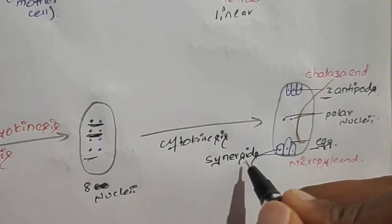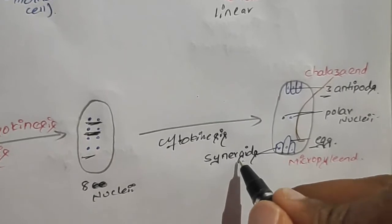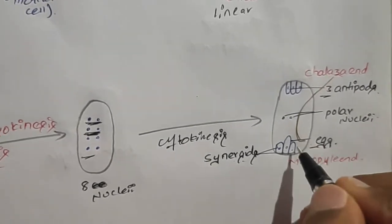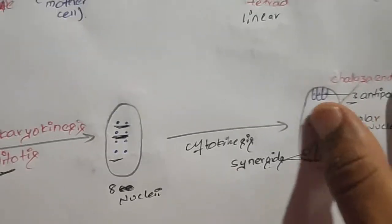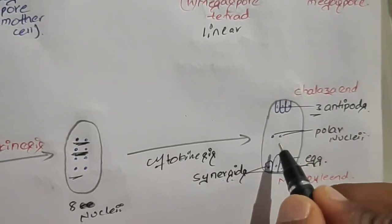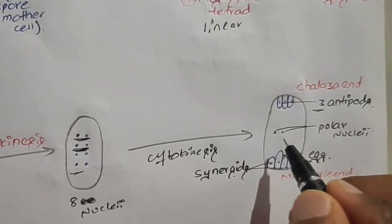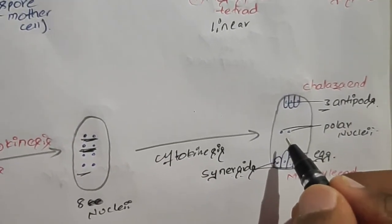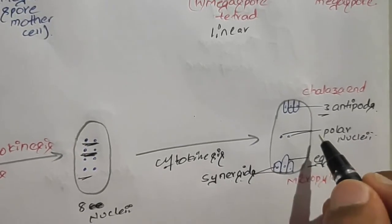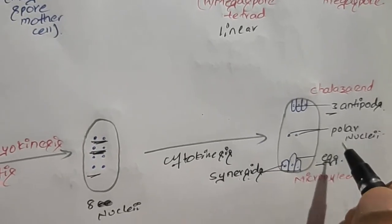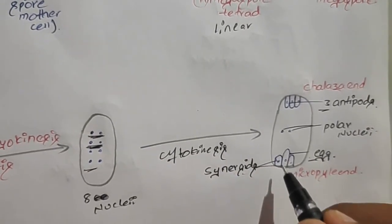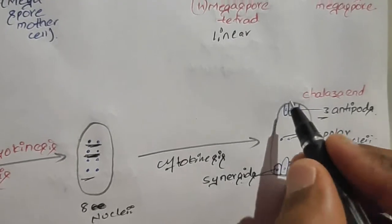The complete structure of synergids and egg together is known as the egg apparatus. The two nuclei which did not take cytoplasm remain in the middle and are known as the polar nuclei. This is the eight-nucleate and seven-celled stage of the embryo sac.